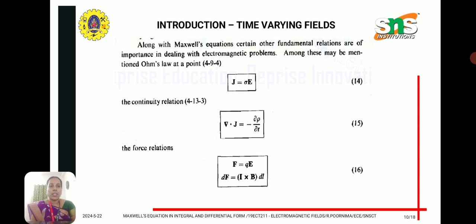In addition to the four Maxwell equations, we also use Ohm's law in point form: J equal to sigma E, where sigma is the conductivity and E is the electric field intensity. The continuity equation is also used: del dot J equal to minus ∂rho/∂t.